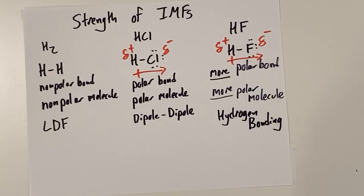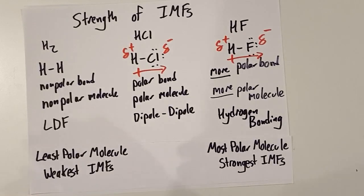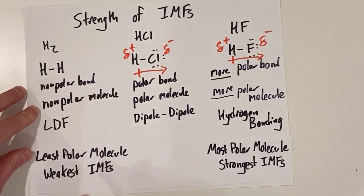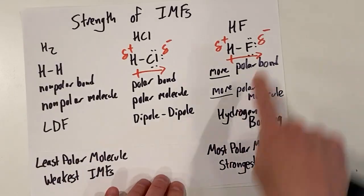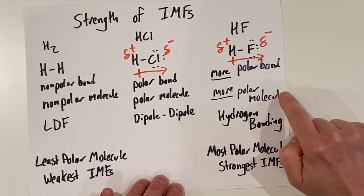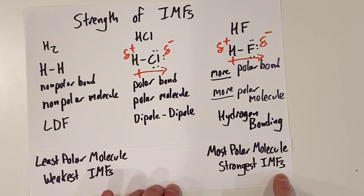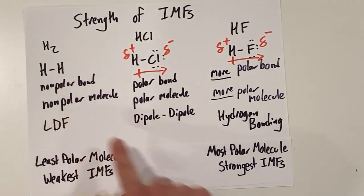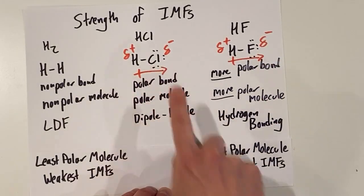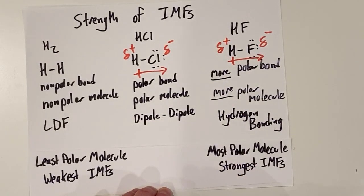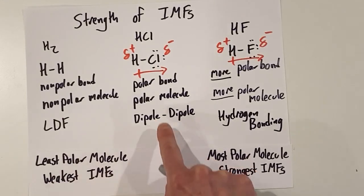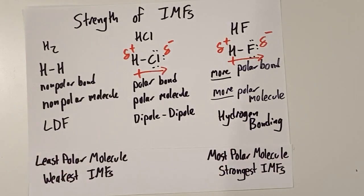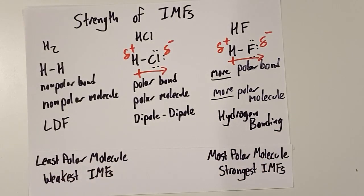So, from least polar to most polar: H₂ is the least polar molecule and experiences only London dispersion forces — the weakest intermolecular forces. HCl with dipole-dipole forces is in the middle: more polar than H₂ but not as polar as HF. Because chlorine is not as electronegative as fluorine, oxygen, or nitrogen, HCl does not engage in hydrogen bonding. HF is the most polar molecule and experiences hydrogen bonding — the strongest intermolecular forces. This explains why hydrogen bonding is the strongest kind of intermolecular force.